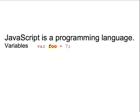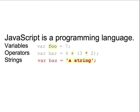Like all programming languages, JavaScript has variables, where you can store a value and refer to it later. Here we're assigning the value 7 to a variable called foo. It also has operators. Here we're multiplying 3 and 2, adding 4 to the result, and assigning the final value to a variable called bar. JavaScript has strings as well. Here we're assigning the sequence of characters — a string — as a value to a variable called baz.